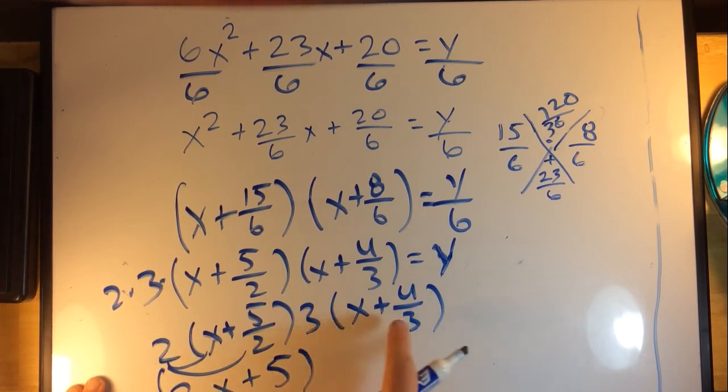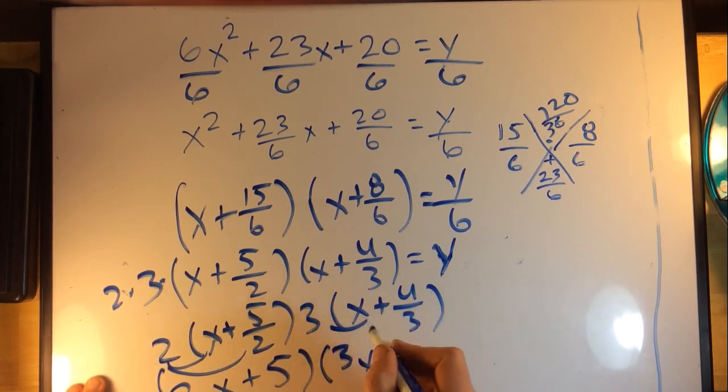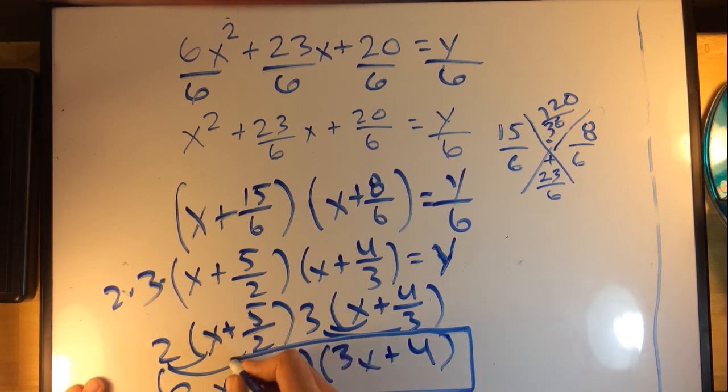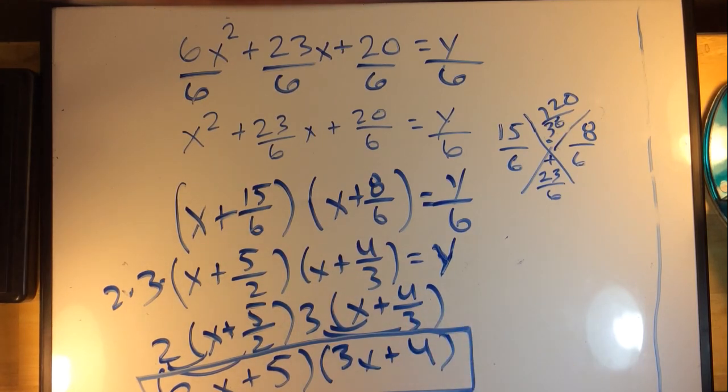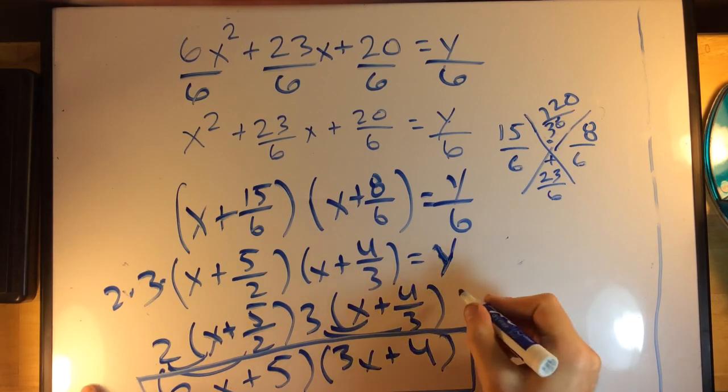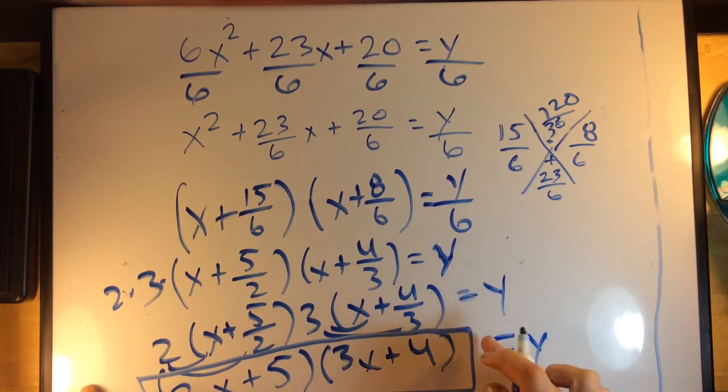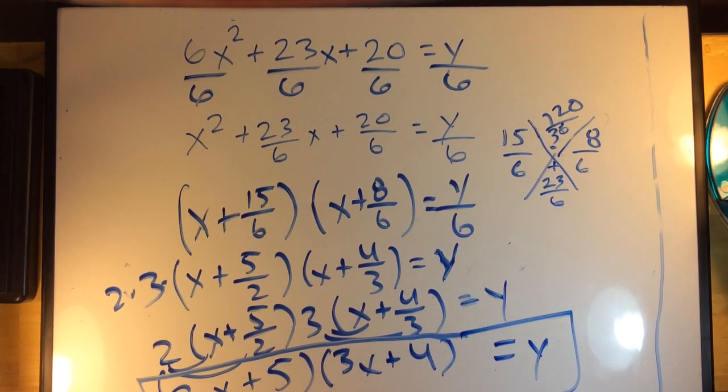If I distribute this 3 through here I'll get 3 times x gives me 3x, 3 times 4/3, those 3s are going to cancel out and I get plus 4. And boom, exact same answer. I basically did the same method, I just showed the fractions and showed why the illegal move actually is legal. And don't forget your y's, this is all equal to y.